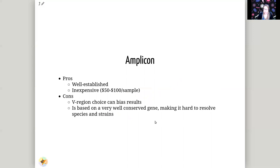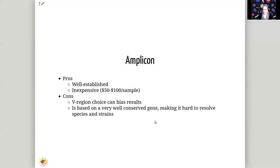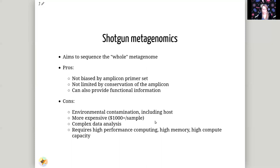Amplicon sequencing has several pros: it is very well established, has been used for a long time, is not very expensive, and there are many tools and reference databases available. Some downsides are that the choice of which V region you sequence may bias your results, since some microbes may be easier to differentiate depending on which V region you choose. Also, because this is based on a highly conserved gene, it is hard to resolve down to species or strain level — genus-level differentiation is typically the best you can do. And of course, you can only do taxonomic profiling — you don't get functional information about what these microbes are doing or whether they carry mutations in certain genes.